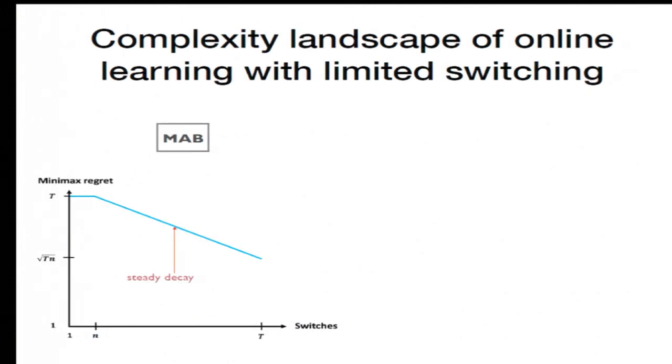The second contribution is the complexity landscape of online learning with limited switching. So here you see the picture for the bandit setting, I'll show the expert setting shortly. On the x-axis you have the switches, so this is the switching budget. On the right-hand side you have T switches, that's when you have as many switches as you'd ever want, so this is unconstrained effectively. On the other side you have no switches.